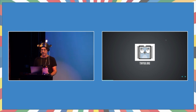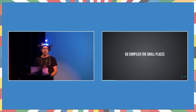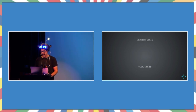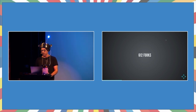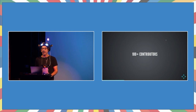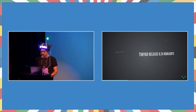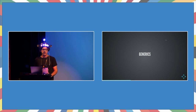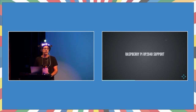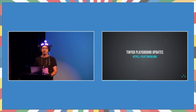I'm here to talk about open source, specifically TinyGo, because this is a small update about TinyGo. TinyGo is a Go compiler for small places like microcontrollers and WebAssembly. Current stats: 11,200+ stars on GitHub, 612 forks, and over 100 contributors on our main repo. 88 different boards supported for running TinyGo on microcontrollers. Our release last month, TinyGo 0.24, includes generics support — yes, you can run generics on Arduinos — lots of WASM and WASI improvements, and Raspberry Pi RP2040 microcontroller support.